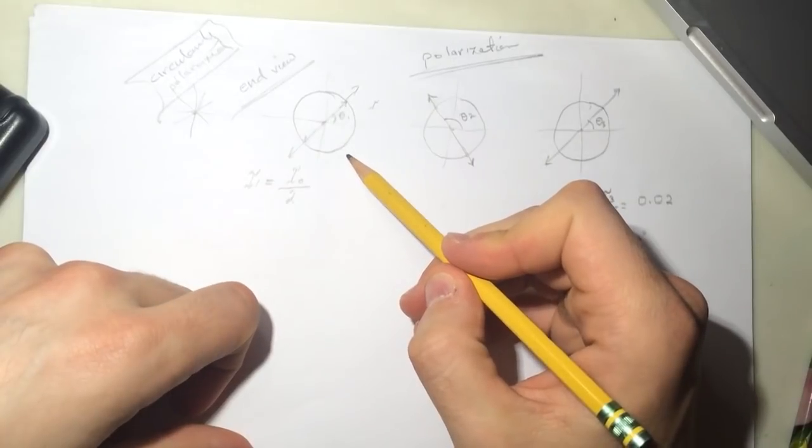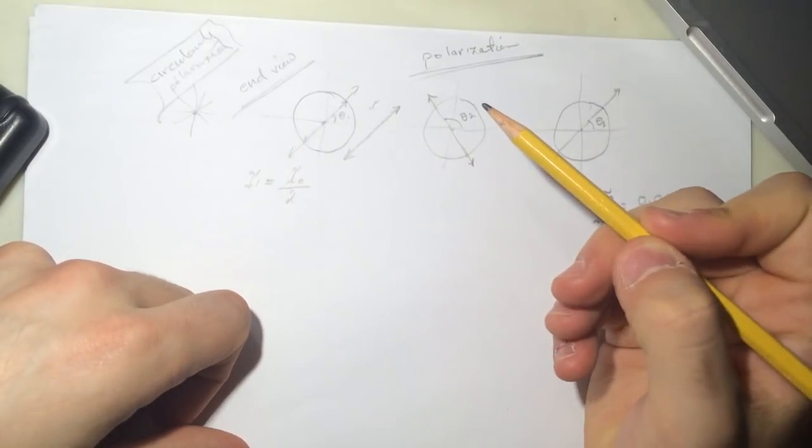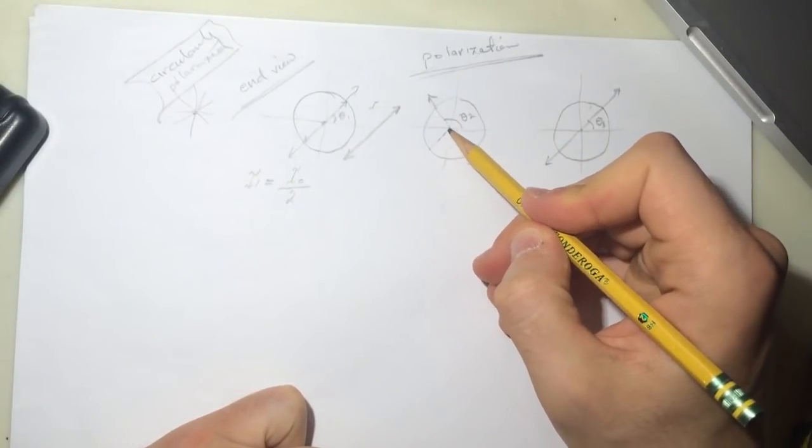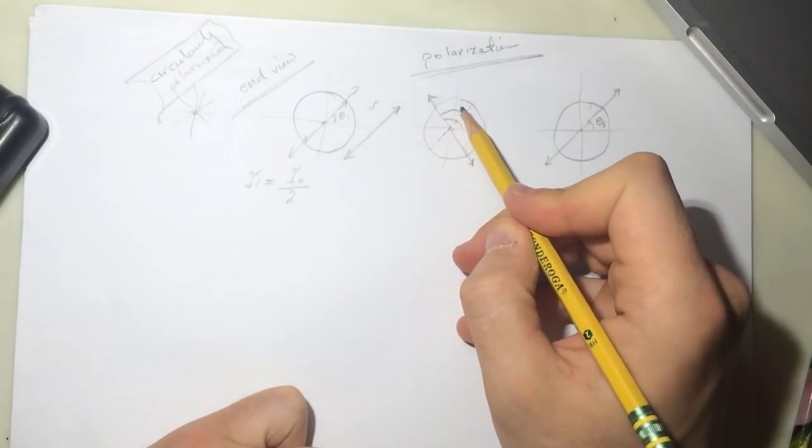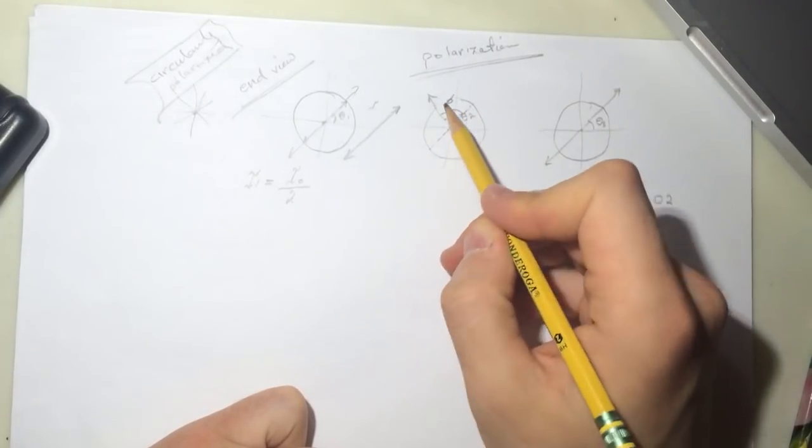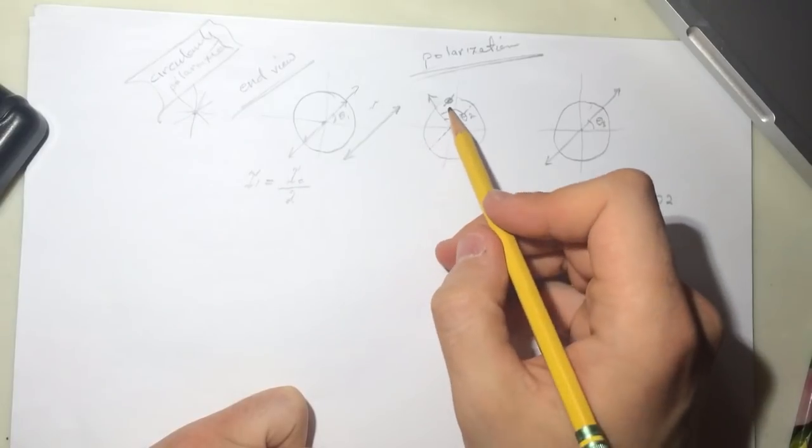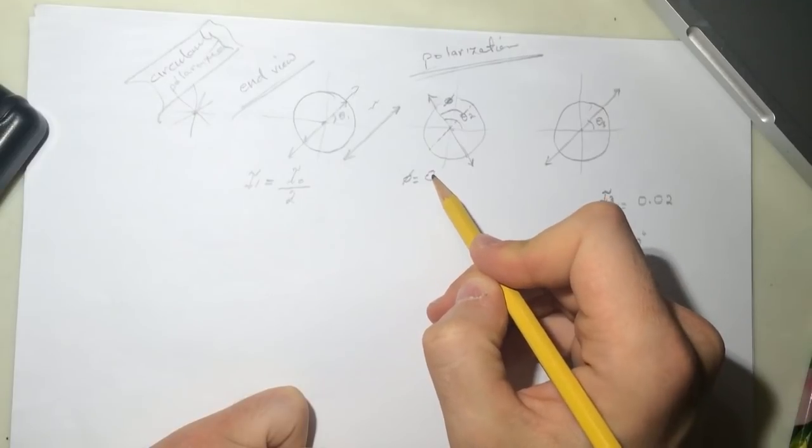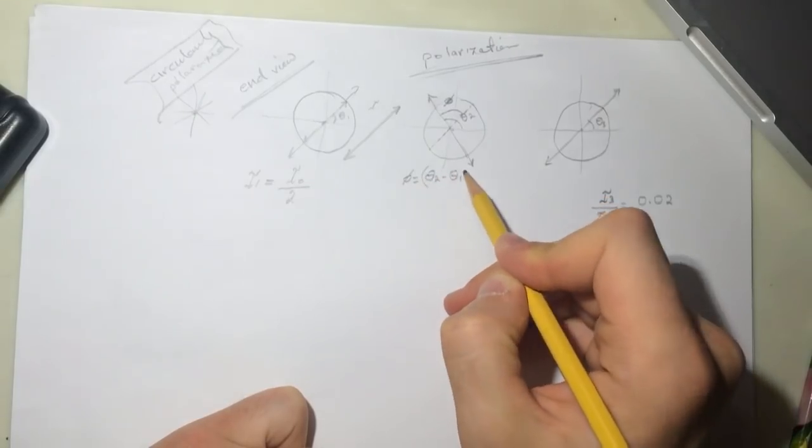So it's going to look like this when it comes out of it. That's how it's going to look like. So draw one here. So we're looking at this angle here, let's call it phi. And we know this angle, it's theta. So the phi will be equal to theta 2 minus theta 1.